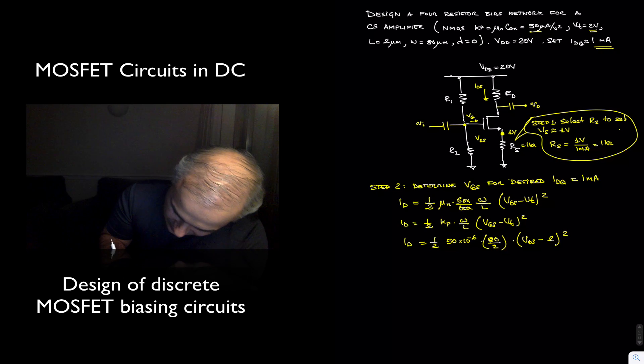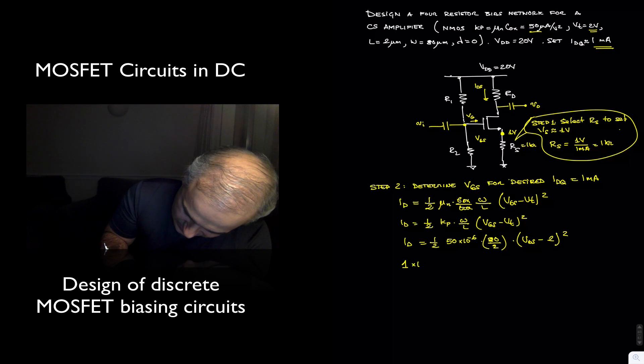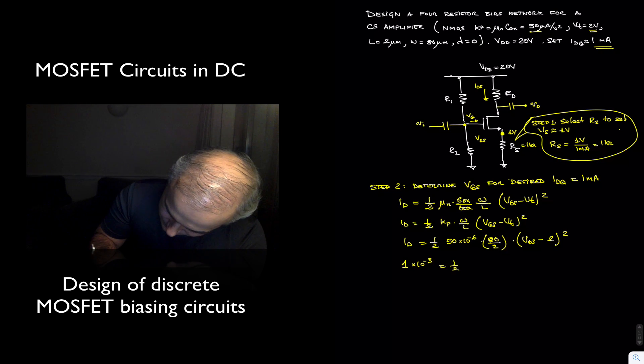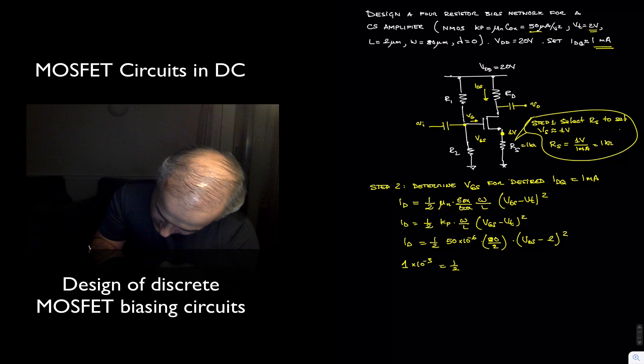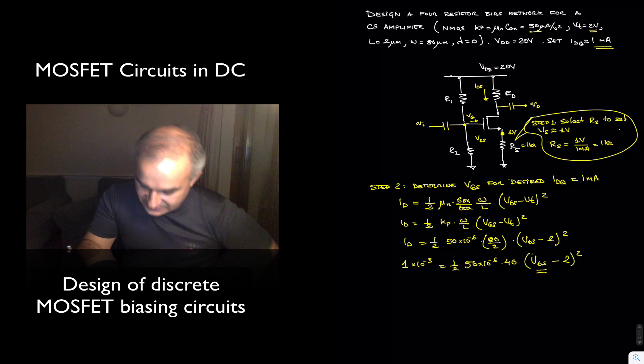Now, in general, we just plug in here 1 mA or 1 times 10 to the minus 3. In this case, we are going to have 50 times 10 to the minus 6 times 40. Actually, this gives you 1 mA. So it's easy in this case. We don't have to solve the equation, but in general we will have to. For V_GS equal, if V_GS equals 3 volts, 3 minus 2 gives us 1 and this gives us 1 milli.